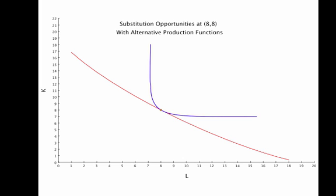The flatter the isoquant, the easier it is to respond to changes in input markets by substituting away from the relatively more expensive input.